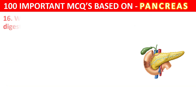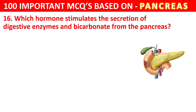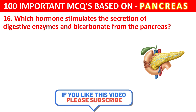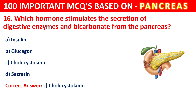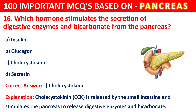Question 16. Which hormone stimulates the secretion of digestive enzymes and bicarbonate from the pancreas? The options are Insulin, Glucagon, Cholecystokinin, or Secretin. The correct answer is C, that is Cholecystokinin. Cholecystokinin (CCK) is released by the small intestine and stimulates the pancreas to release digestive enzymes and bicarbonate.